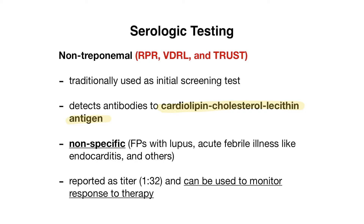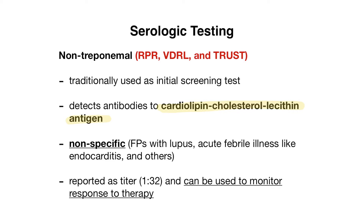These tests are also quantitative and so they are reported as a titer and can often be used to monitor response to therapy. Moving on to the second serologic test — the treponemal tests. These tests detect antibodies to specific treponemal antigens and because of this, they tend to be more specific than the non-treponemal tests.